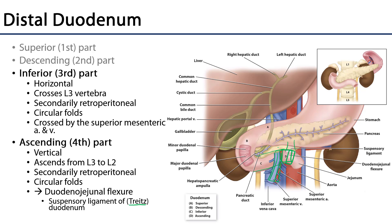It may be of consequence to note that this suspensory ligament is a landmark for categorizing gastrointestinal bleeds. Any bleeds that are proximal to this are upper GI bleeds, and any bleeds that are distal are lower GI bleeds.